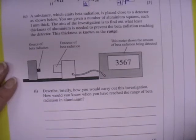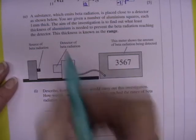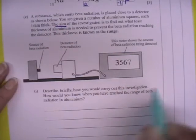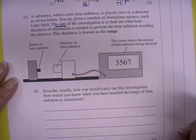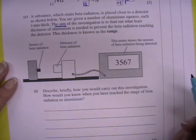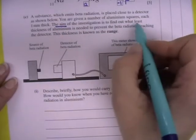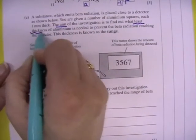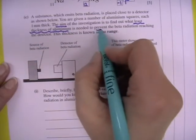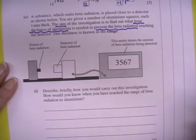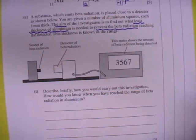A substance which emits beta radiation is placed close to a detector as shown below. You are given a number of aluminum squares, each one millimeter thick. The aim of the investigation is to find out what least thickness of aluminum is needed to prevent the beta radiation reaching the detector. And this thickness is known as the range. So our aim is to find out the least thickness of aluminum to prevent the beta radiation reaching the detector.